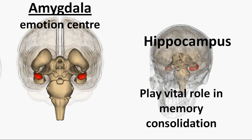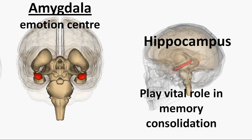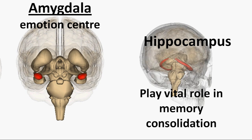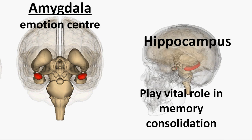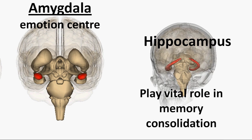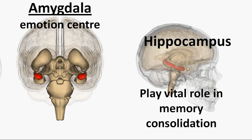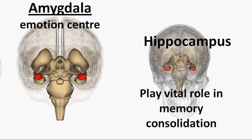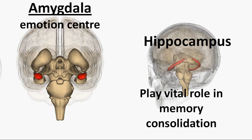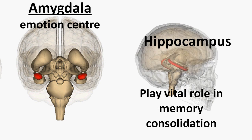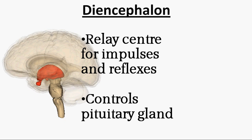The other part of the telencephalon controls emotion, motivation, and memory, and includes structures like the hippocampus, cingulate cortex, and amygdala. Remember the seahorse-shaped hippocampus — it converts short-term memory into long-term memory, making it a very important part. The other section of the forebrain is the diencephalon, which is mainly made of the thalamus and hypothalamus.